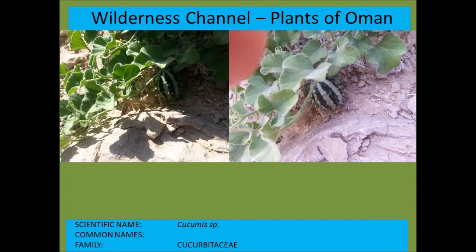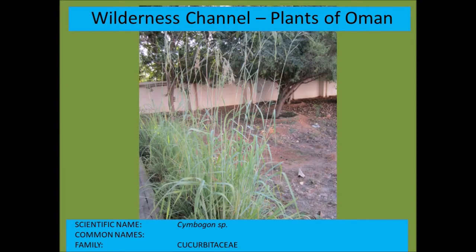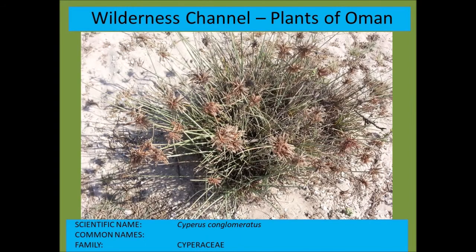This is one of the Cucumis species — perhaps Cucumis prophetarum. And this is Cymbopogon, one of the turpentine grass species. Cyperus conglomeratus is from the Cyperaceae or sedge family, and is very common in many areas of Oman.